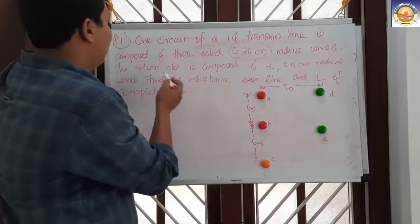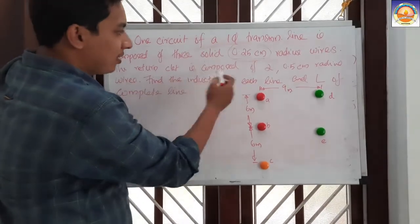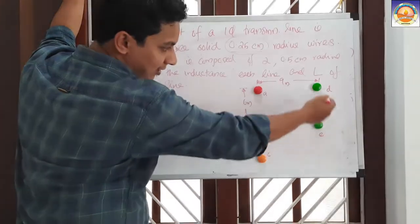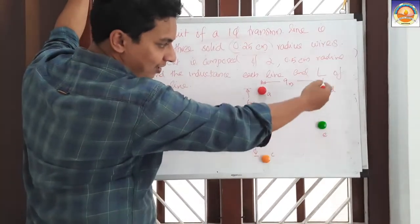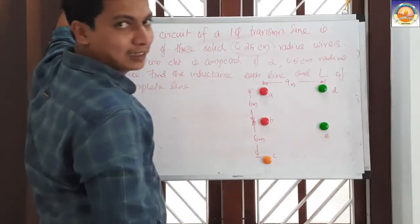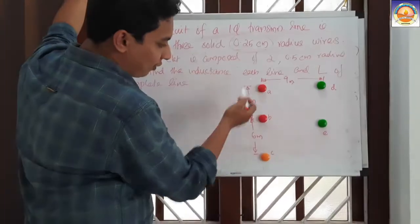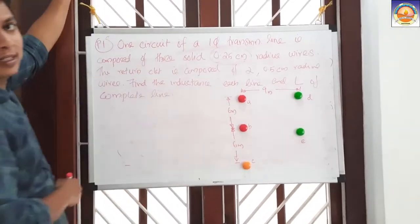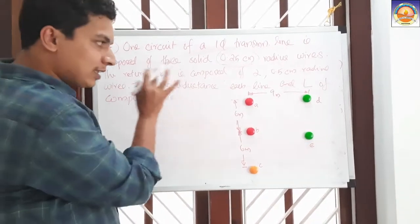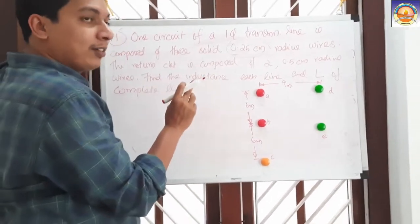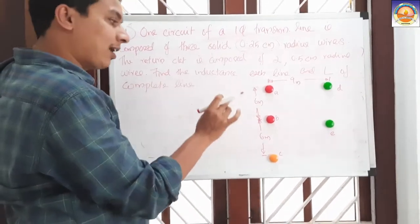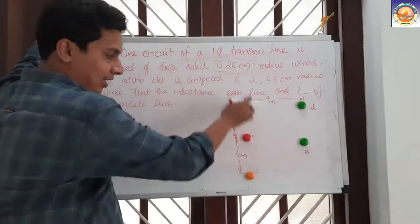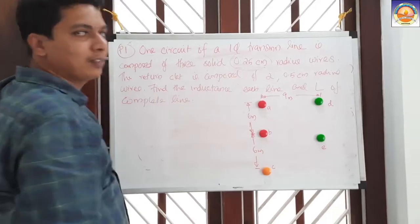The return circuit is composed of 2.5 cm radius lines. On the first circuit, we have 3 conductors; on the second circuit, we have 2 conductors. In this system, we are asked to calculate the total inductance of each circuit as well as the total inductance of the entire circuit.